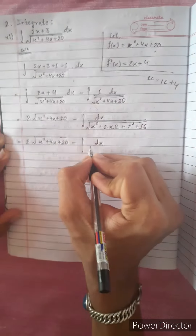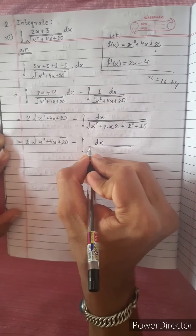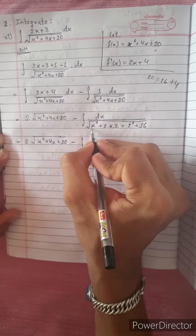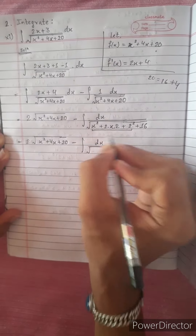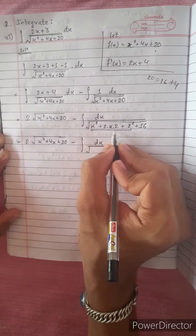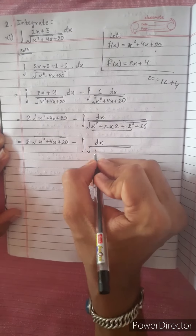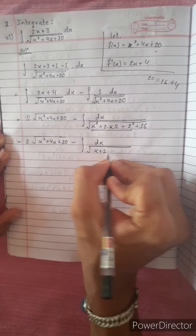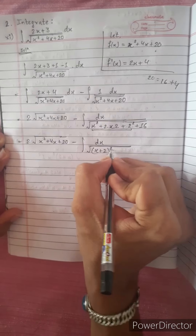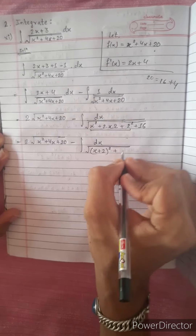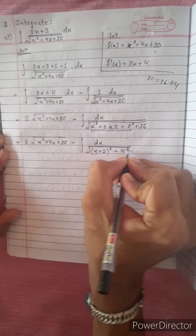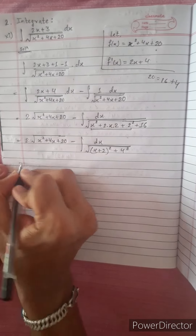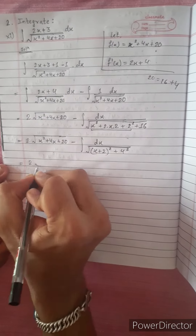Integration dx divided by this expression. We use the formula a squared plus 2ab plus b squared equals (a plus b) squared. Here 16 equals 4 squared, so the formula gives a value of 4 for the constant term.